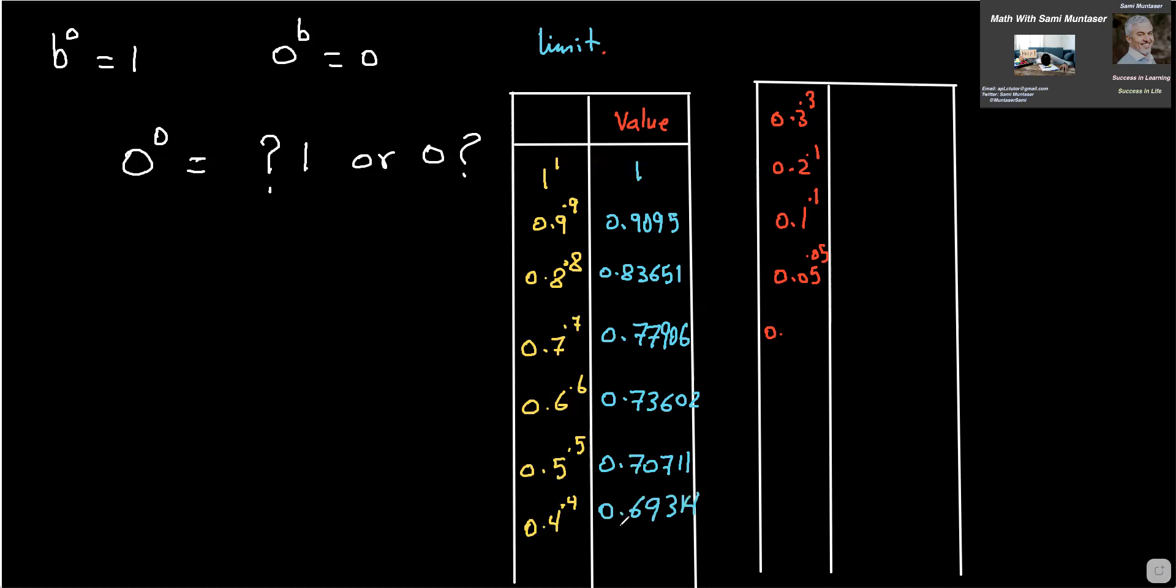So again, yeah, it's decreasing, but it's starting to decrease slower. Now let's go to 0.3 to the power of 0.3. Wow, that gives me 0.69685, round it up.